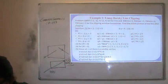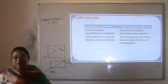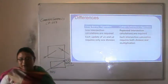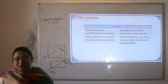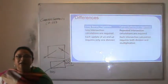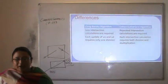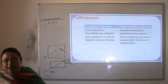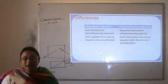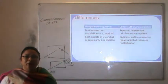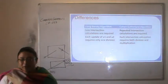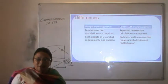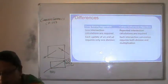Now, what are the differences between the Liang-Barsky algorithm and Cohen-Sutherland algorithm? In case of Liang-Barsky, fewer intersection calculations are required. But in Cohen-Sutherland, repeated intersection calculations are required. Additionally, in Cohen-Sutherland, both division and multiplication are needed, making it a more complex calculation.